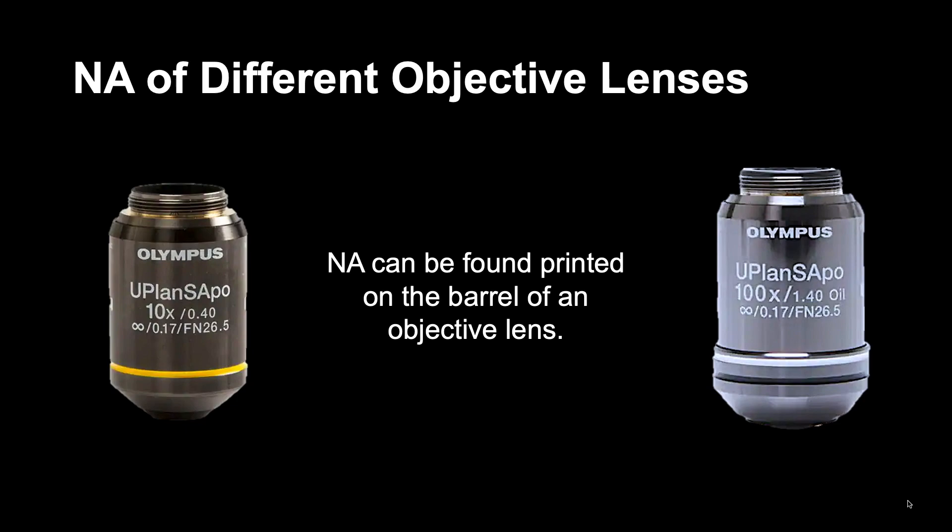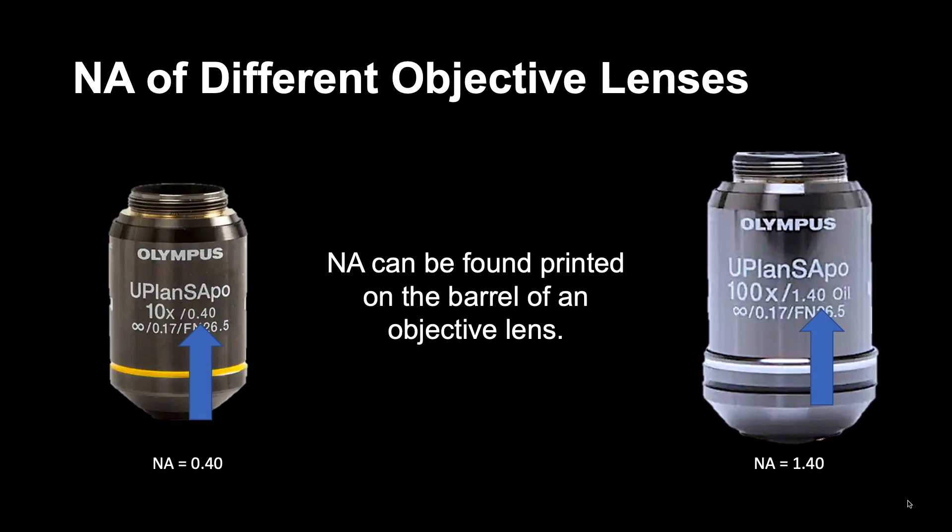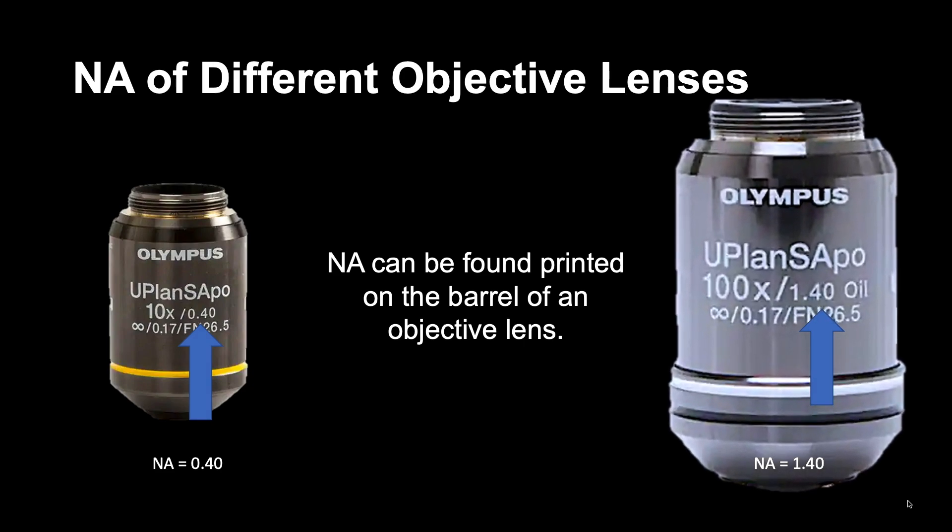Objective lenses typically have the numerical aperture value printed on their barrel, as shown here for a 10x and a 100x objective lens. It is also important to note that the lenses that require immersion oil will also have that printed on the barrel. Be aware that there are multiple types of immersion oils, so be sure that you are using the one that is most suitable for your lenses and applications.